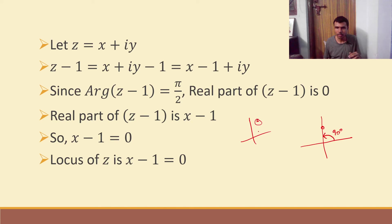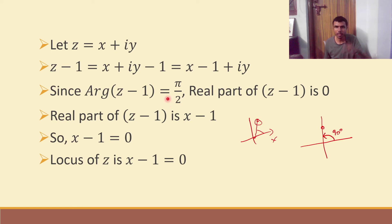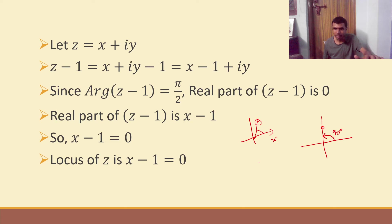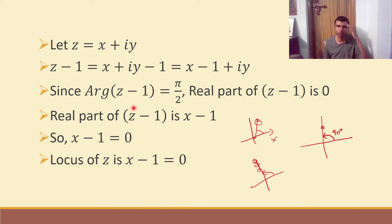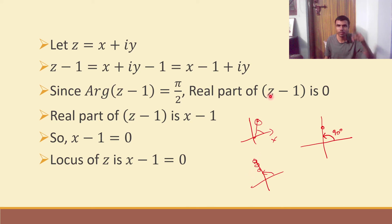Argument means: take any complex number and join it with the origin. The angle that this line segment makes with the positive direction of the x-axis is called the argument. Here, the argument is pi by 2, which means 90 degrees. Starting from the origin, 90 degrees from the x-axis lands on the y-axis. So z minus 1 lies on the y-axis, where the x coordinate is zero, meaning the real part of z minus 1 is zero.